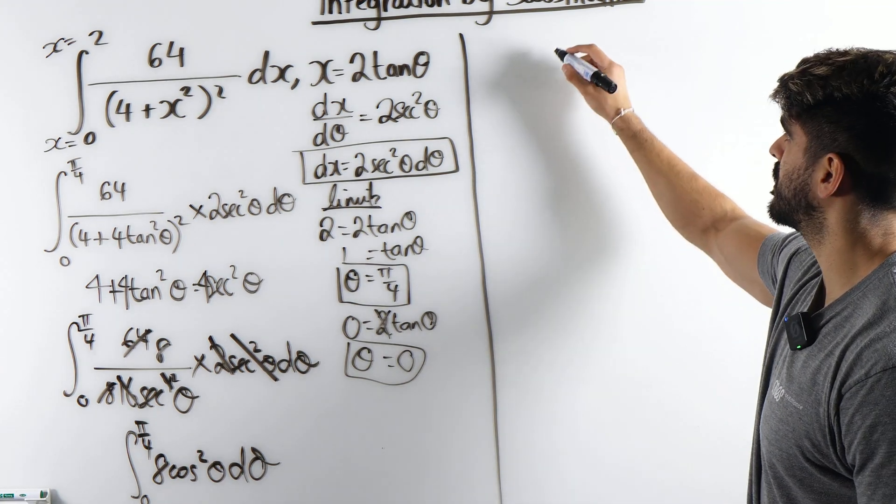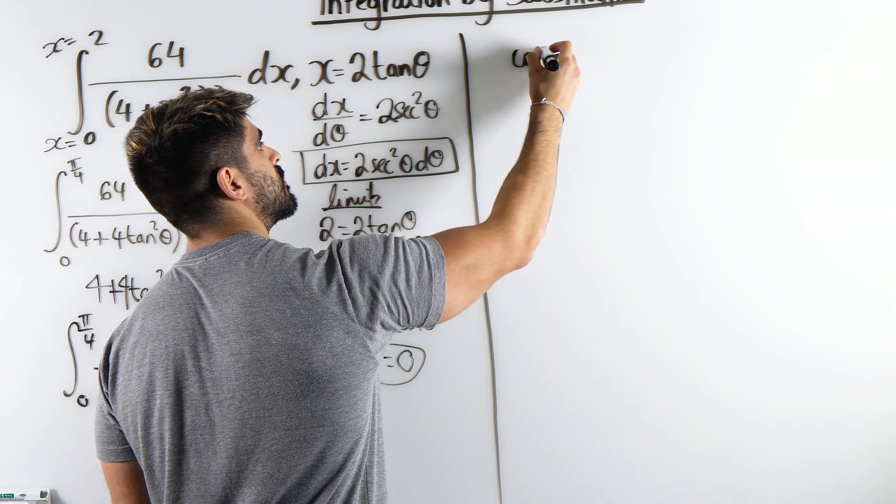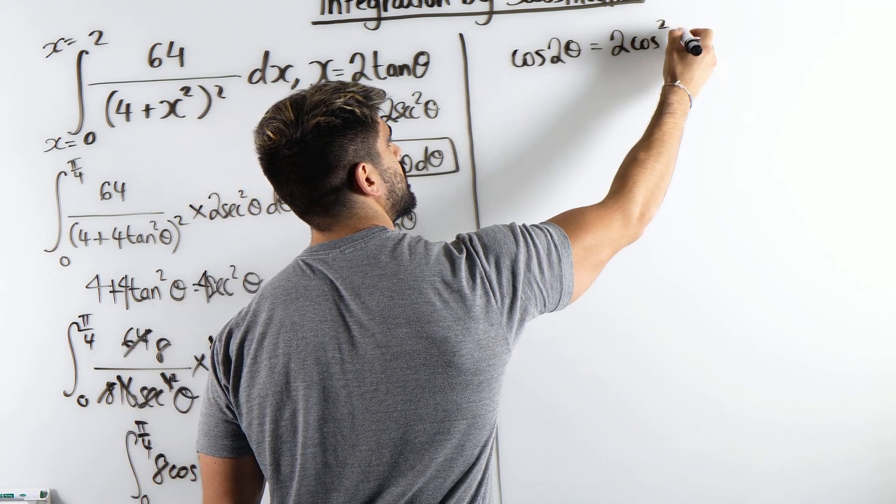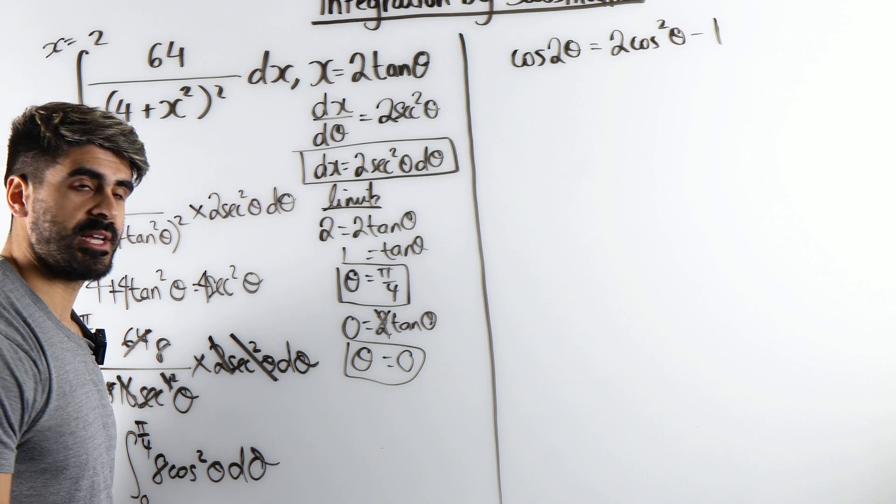So what is our double angle IDs? We know that cos of 2 theta is 2 cos squared theta minus 1. But I want 8 cos squared.